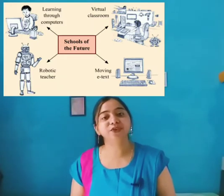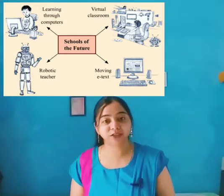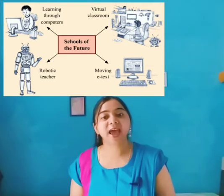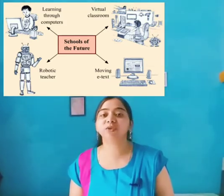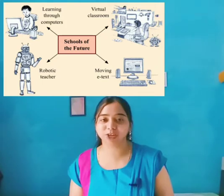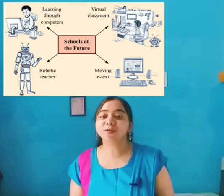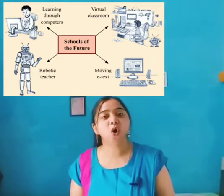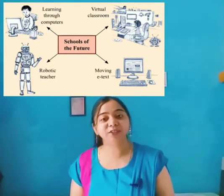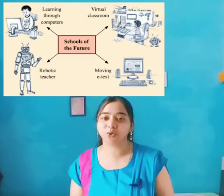The diagram given here may give you some ideas. Let us see the diagram — how will school be in the future? There will be learning through computer. There will be virtual classrooms, where each child is sitting at their home with a computer in front of them, studying in a virtual classroom — not a real classroom, but a world created in a computer. There would be robotic teachers, that means robots who have been pre-programmed to teach you a particular subject. Then there would be moving e-text, meaning all the books will be on the computer. Some children might feel the way I am teaching you is also a virtual classroom, and this is something we are going to read in this story — a school of the future.